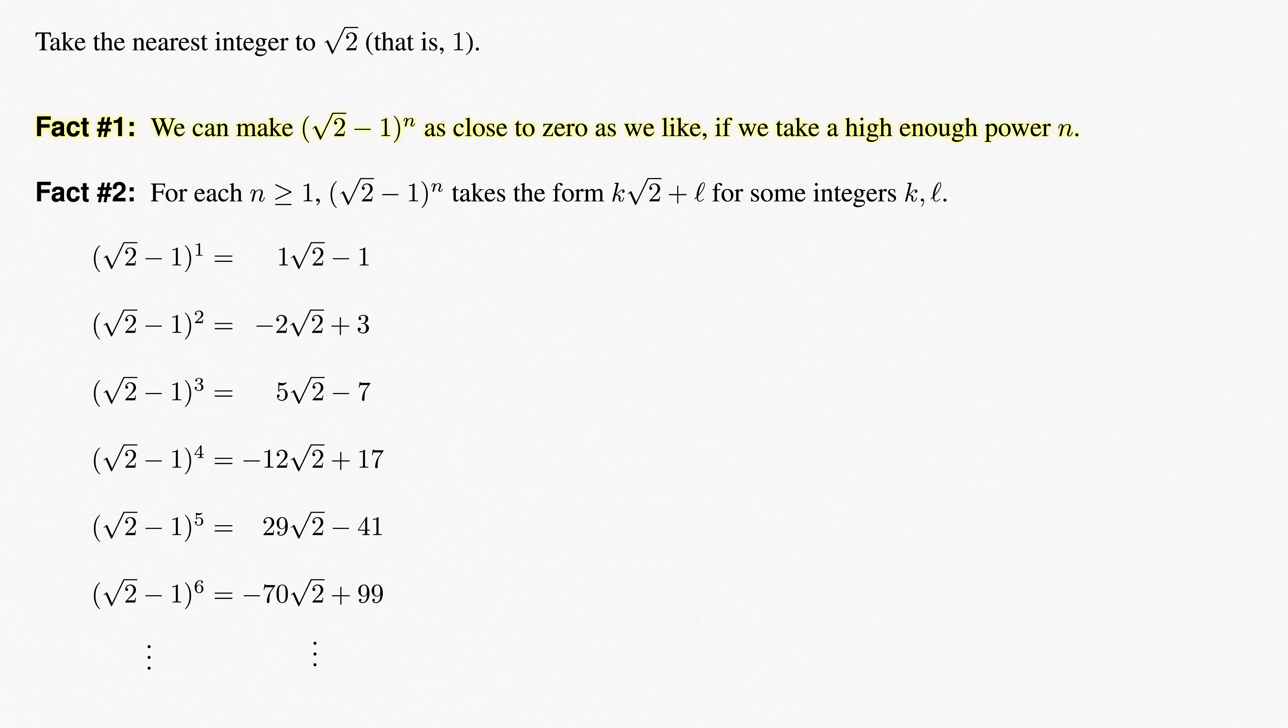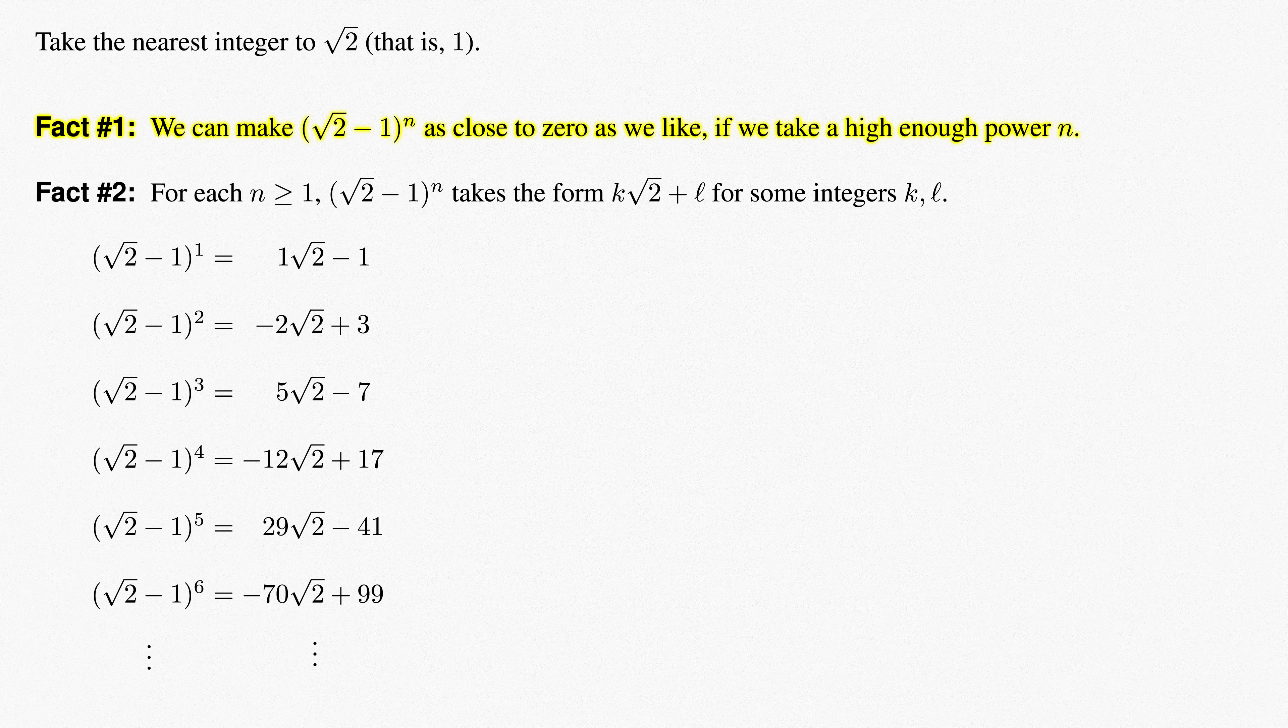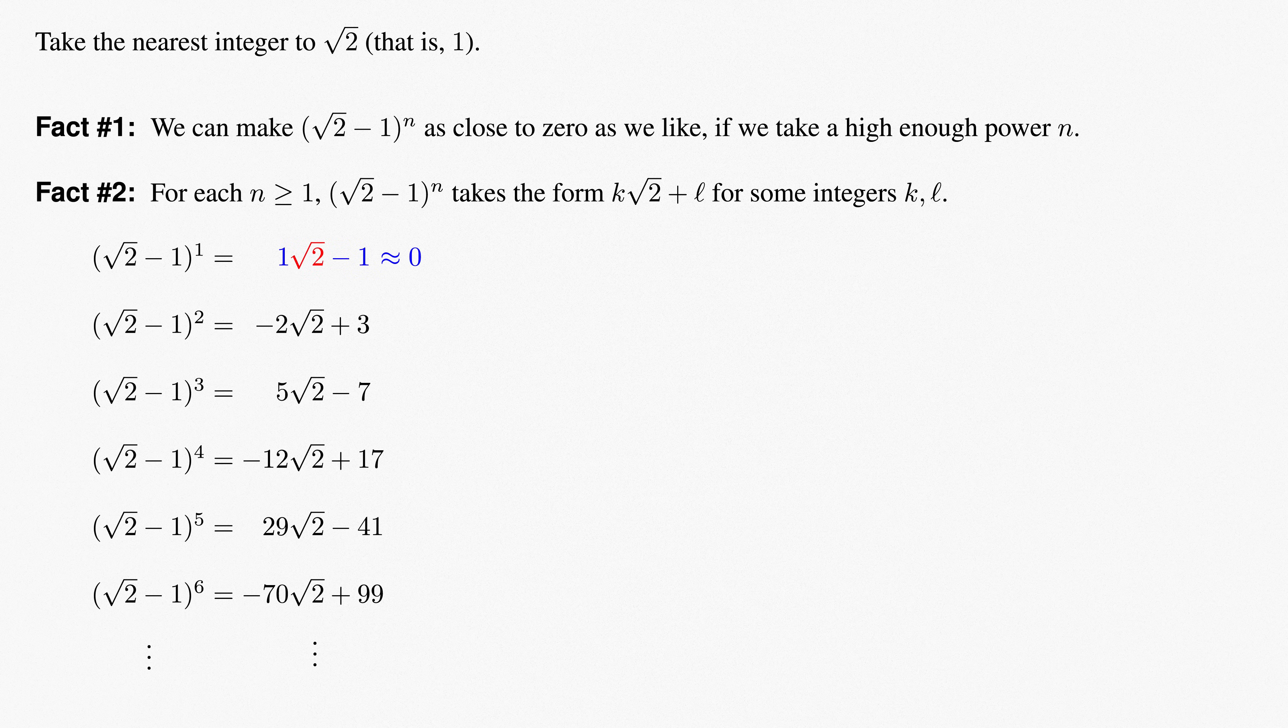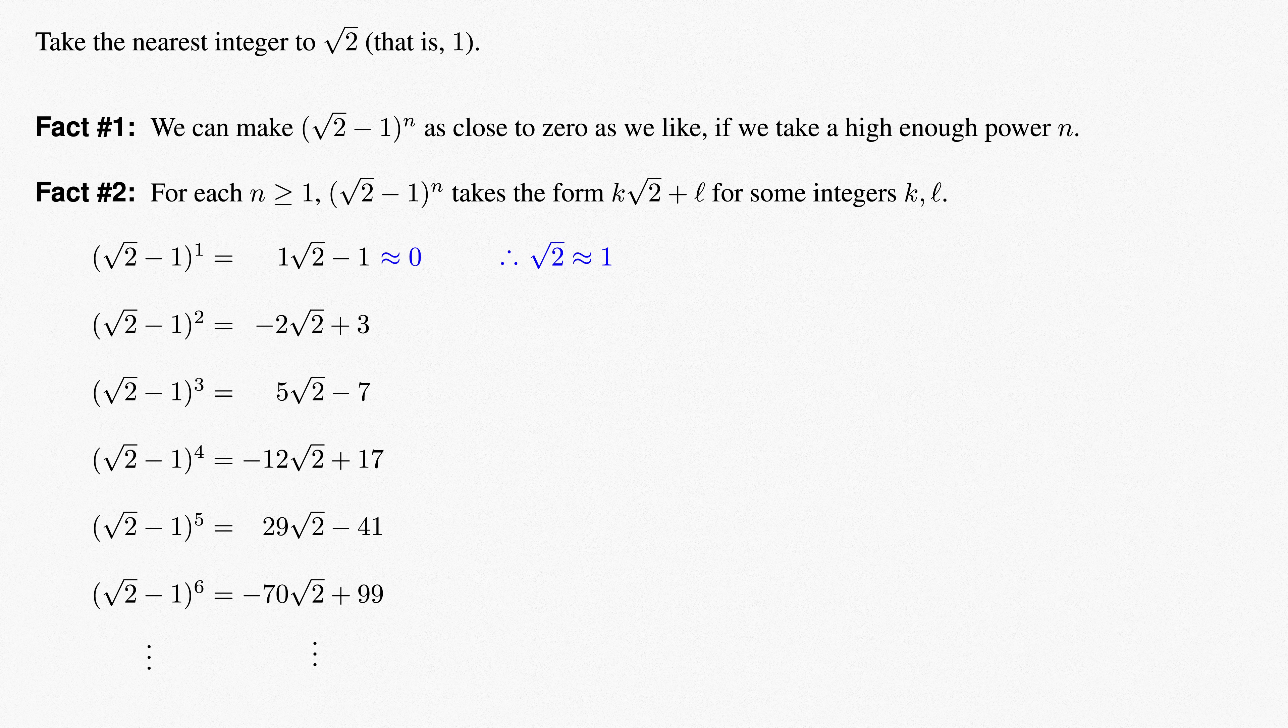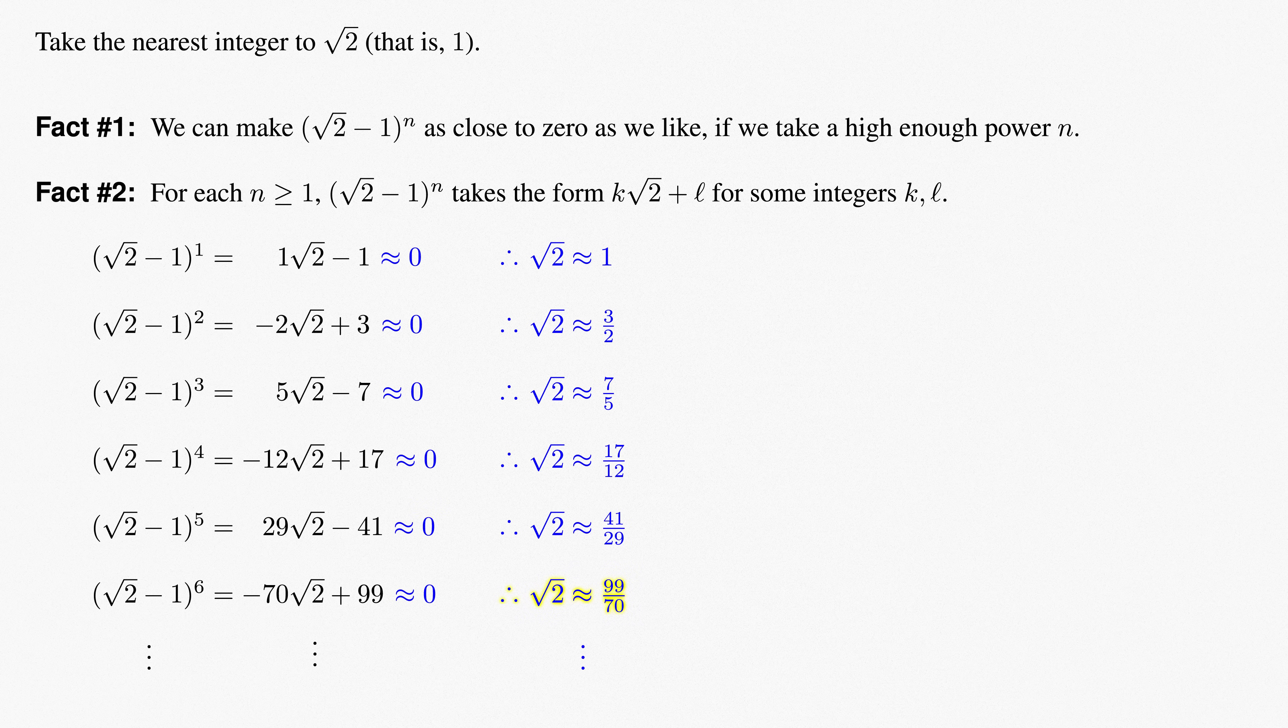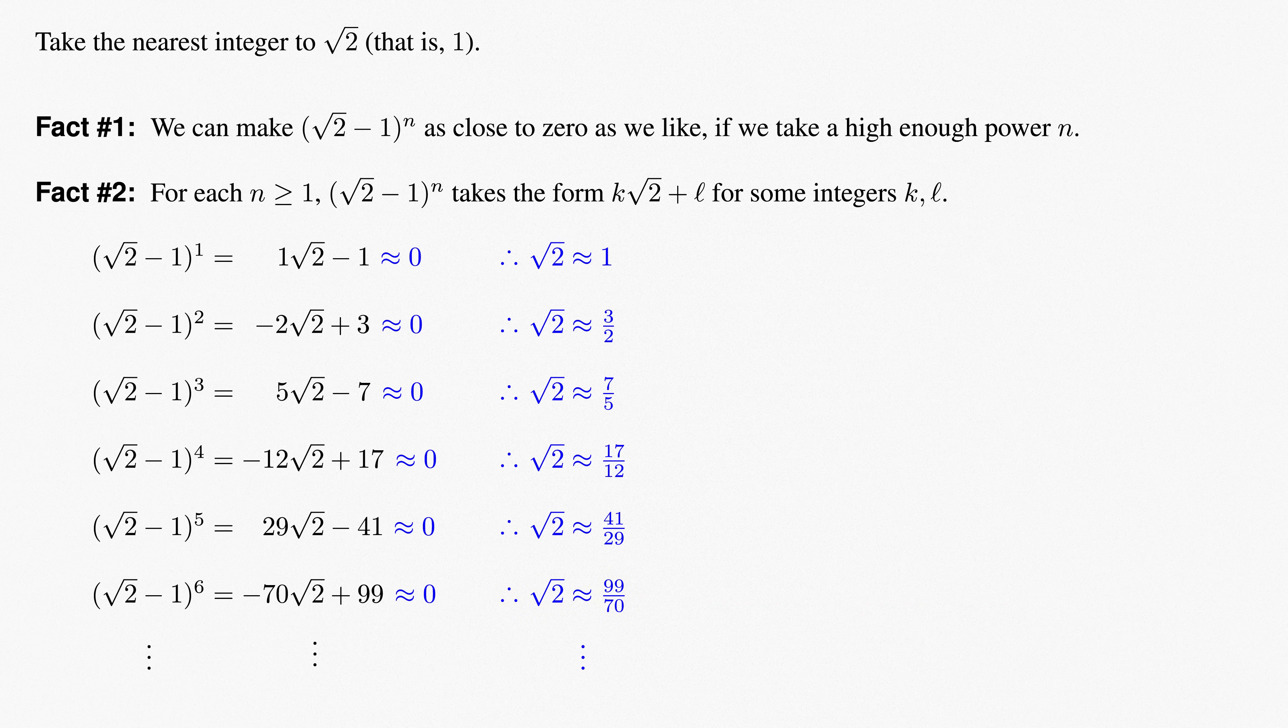While all of this work is still up, fact number 1 that these powers of root 2 minus 1 are going to 0, which is true, combined with fact 2 putting these powers into nice forms, immediately give us nice rational approximations of root 2. Since root 2 minus 1 is approximately 0, we can solve for root 2, to get root 2 approximately equal to 1. Not that interesting, but these rational approximations get better and better. The second power gets us root 2 is about equal to 3 halves. Then the third power tells us that root 2 is about equal to 7 fifths. The fourth power gets us root 2 about equal to 17 twelfths, and so on. This last estimate of 99 over 70 is good to within less than 1 ten thousandth, and they keep getting better. These approximations get closer to root 2 exponentially because we're taking powers of root 2 minus 1.